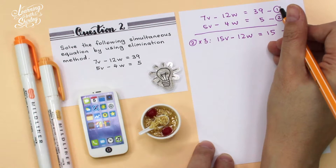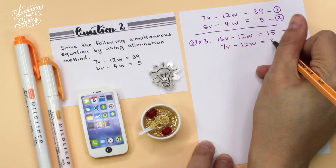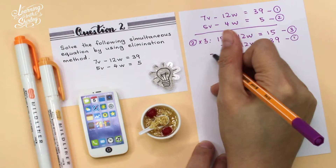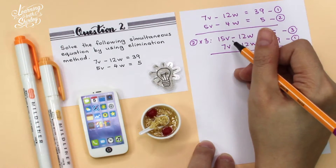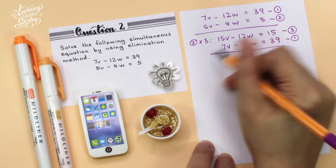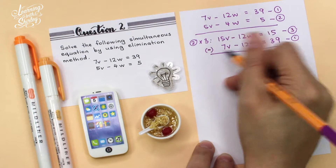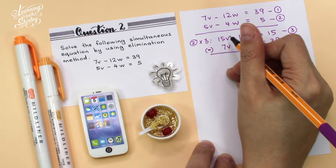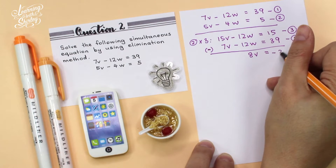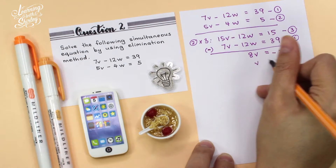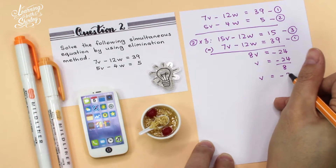I move equation 1 down here: 7v minus 12w equals 39. Now we eliminate the 12w. Since both terms are negative 12w, we subtract. Negative 12w minus negative 12w gives 0. So 15v minus 7v gives 8v, equals 15 minus 39, which is negative 24. So v equals negative 24 divided by 8, therefore v is equal to negative 3.